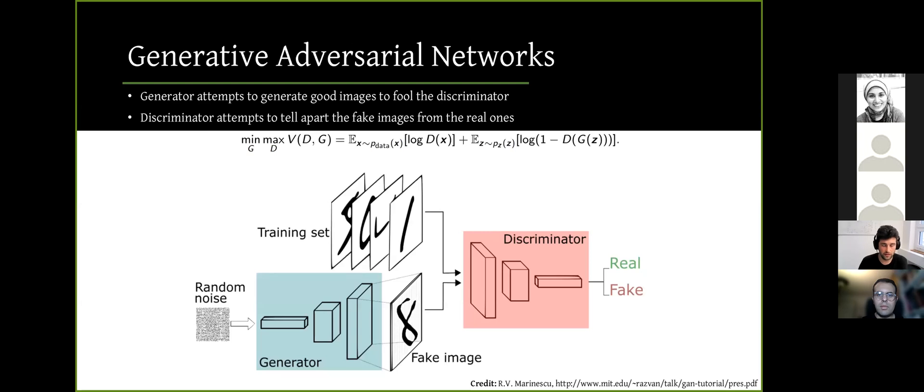And also we use in this work Generative Adversarial Networks, GANs in short. GANs are basically generative models which have a generator and a discriminator module. And the generator attempts to generate realistic samples to fool the discriminator. And the discriminator tries to tell apart if the generated samples come from a real distribution or from the generator itself.